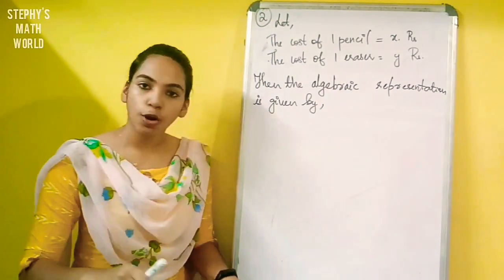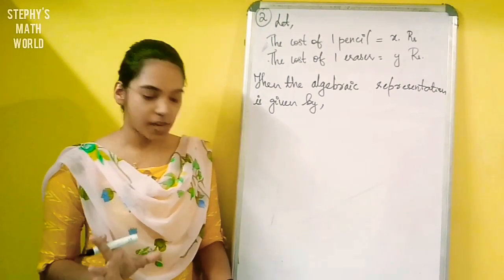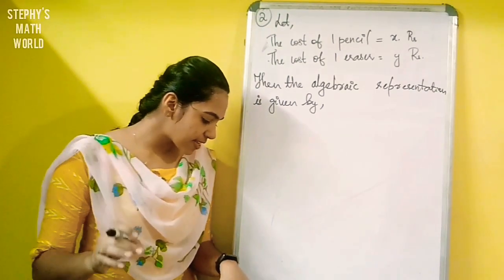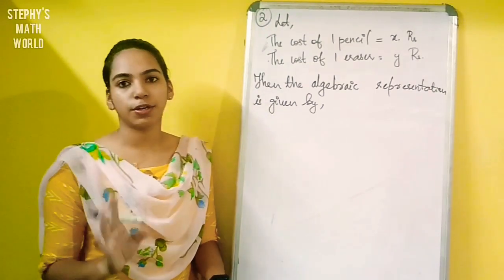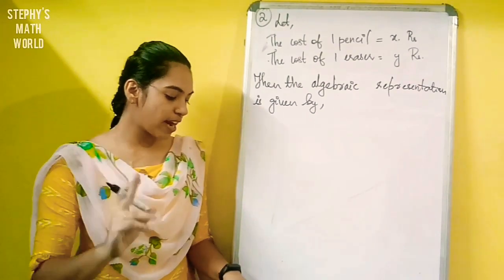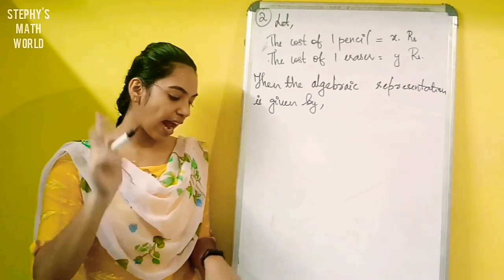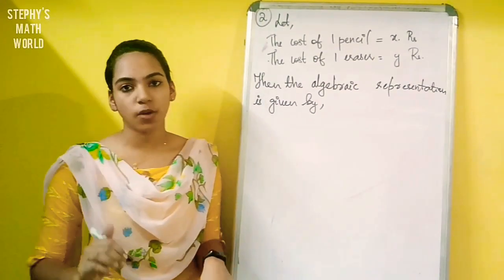In the first case, we have one equation. In the second case, we have one equation. We will write the number of pencils and erasers for each case.